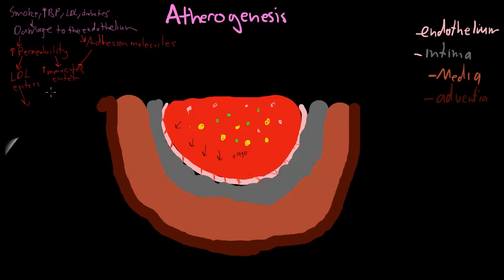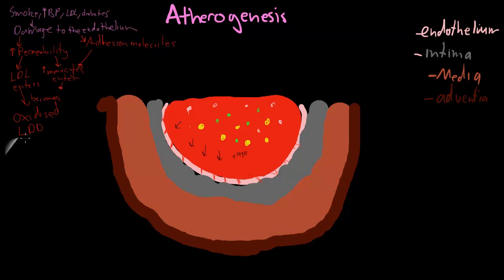The LDL which enters, along with the monocytes, actually becomes oxidized LDL through free oxygen radicals and other things — monocytes, smooth muscle cells — that damage it.